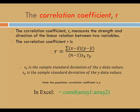One note: R is the symbol that we use for a sample correlation coefficient. The symbol for the population correlation coefficient is the Greek letter rho.